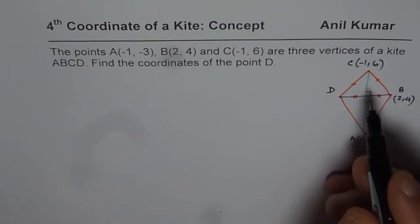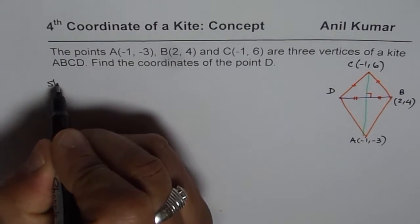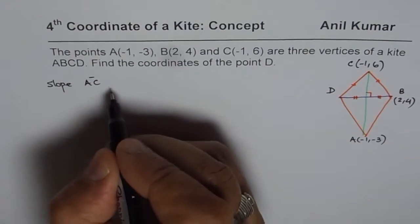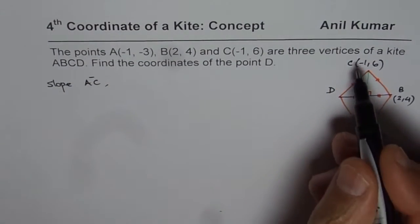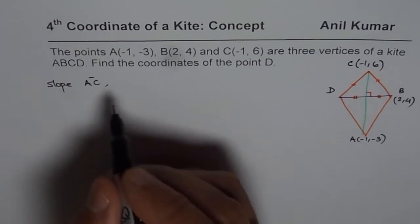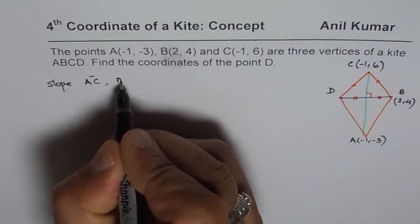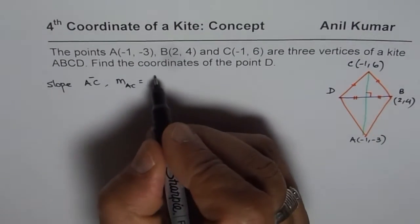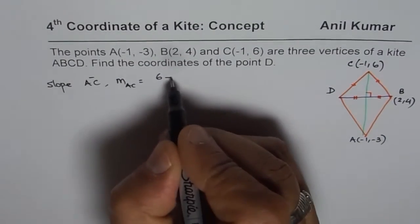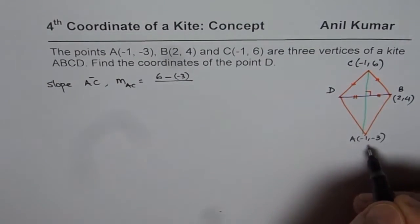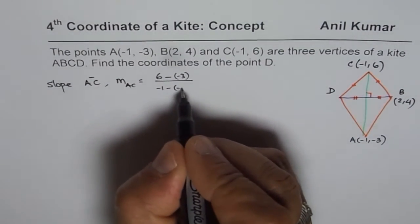Now in this particular example, what is the slope of AC? We can write slope of line AC is, since the x-values are same, it is undefined. If you want, you can calculate also. So M of AC is (6 - (-3)) / (-1 - (-1)) = 1/0, or we say undefined as expected.